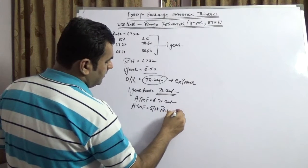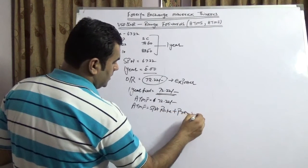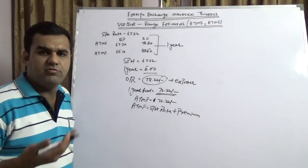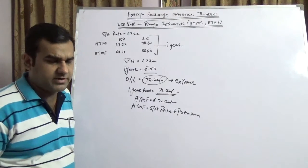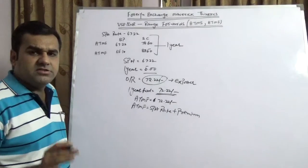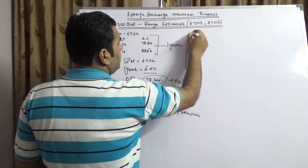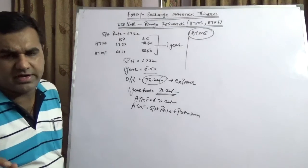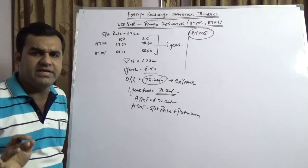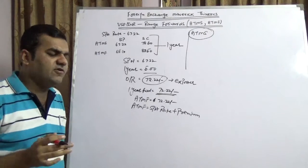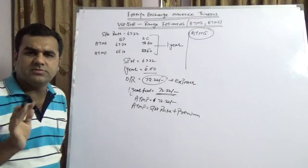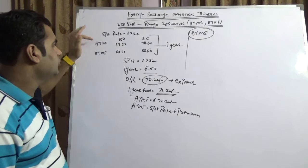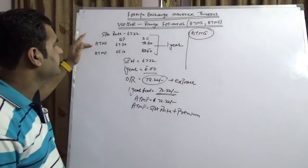There is another concept in range forward. There are a lot of companies who are doing this, and being a corporate treasurer I never do that. This is at-the-money spot. What this at-the-money spot is all about? At-the-money spot is the current spot price. So there are two ways of pricing a range forward contract: one way is via at-the-money forward, second way is via at-the-money spot.